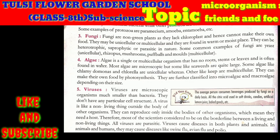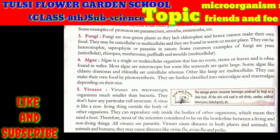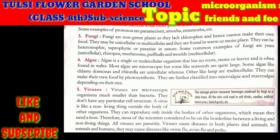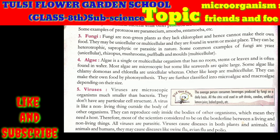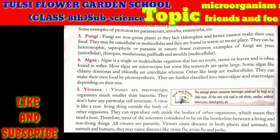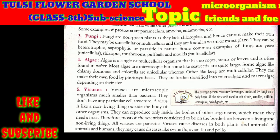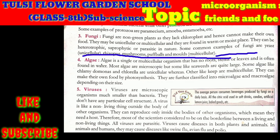The next topic is fungi. Fungi are non-green plants. They do not have chlorophyll, which is why they are non-green, as they lack chloroplasts and hence cannot make their own food. They may be unicellular or multicellular and are found in warm and moist places. They can be heterotrophic, saprophytic, and parasitic in nature. Common examples of fungi are yeast, rhizopus, mushroom, puff balls, and molds.